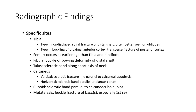Specific findings by site: tibia — non-displaced spiral fracture of the distal shaft, often better seen on oblique view; buckling of the proximal anterior cortex; transverse fracture of the posterior cortex. Femur fractures occur at an earlier age than tibia and hindfoot fractures.